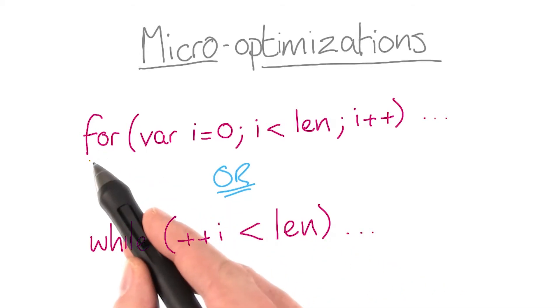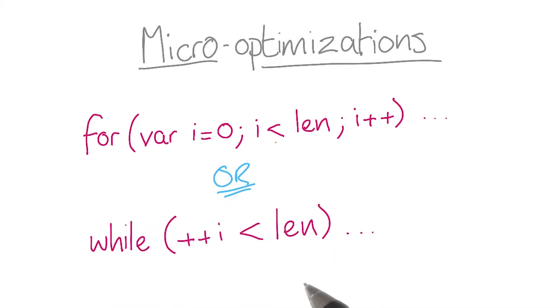Like say, which is faster, this for loop or this while loop? But the thing is, we don't know how the JavaScript engine is going to treat these two pieces of code, so there's no point in guessing.